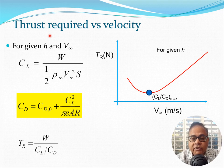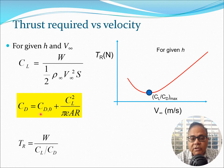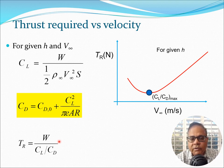Now let's start looking at the thrust required curve — thrust required versus velocity. To do that, consider that you are at a given height and velocity. At that height and velocity you can easily calculate C_L, because C_L equals W divided by (half rho_infinity v_infinity squared × S). You know the weight of the aircraft, the density at the given height from the standard atmosphere, the wing area S, and the velocity v_infinity. Once you calculate C_L, you can put it in the drag polar and calculate C_D, since C_D equals C_D0 plus C_L squared divided by (pi × e × AR). Then T_r equals W/(C_L/C_D), giving T_r as a function of v_infinity.